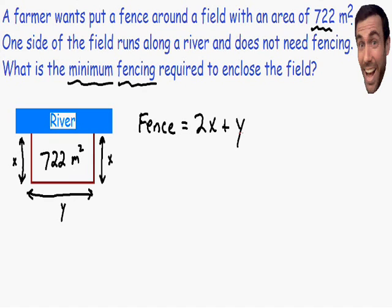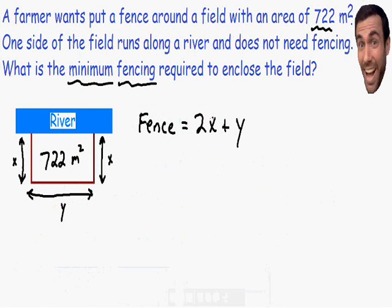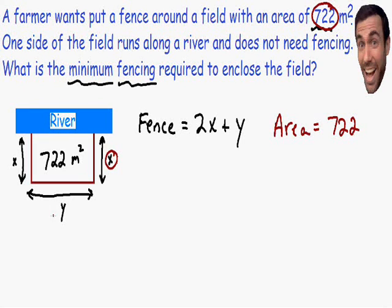Step number two says to reduce the equation to one variable. Our fence equation has two variables, x and y, so we need to eliminate one. We need another piece of information. The problem tells us the area is 722 square meters, and the formula for area is length times width, x times y. So x times y equals 722. We can solve this for x or y and plug it into the fence equation to reduce it to one variable.